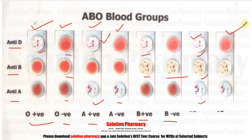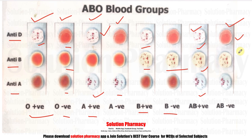In the last slide, no agglutination reaction occurs in the drop to which anti-D is added, meaning antigen D is absent — so the blood type is negative. Agglutination reaction occurs in both the drops to which anti-A and anti-B are added, so the blood group is AB negative. This is how we can determine the blood group. Thank you very much for watching this video.